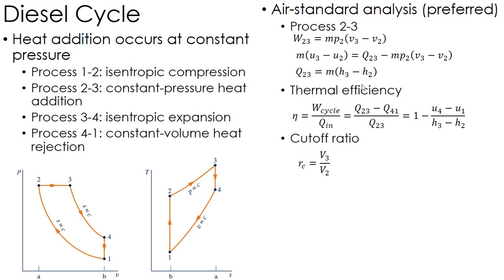Essentially, it's a ratio of volume 3 to volume 2. Volume 3 being the start of the isentropic expansion, volume 2 being at the end of the compression. So it's basically that volume ratio of the constant pressure heat addition.